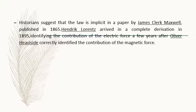There is something interesting about the historical development of Lorentz force. Many scientific historians suggest that the law is implicit in a paper by Maxwell published in 1865. But a specific derivation was first used by Lorentz in 1895 — about 30 years later. In physics we have many such cases where somebody discusses something without emphasis, and after some time another scientist formally uses it. Oliver Heaviside also correctly identified the contribution of the magnetic force itself.